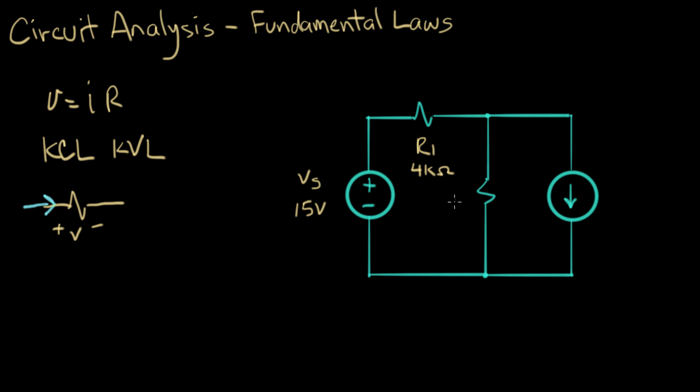And another resistor R2 is sitting right here. And we'll give it a value of 2k ohms, 2,000 ohms. And finally there's a current source sitting over here. And this has a value of 3 milliamps flowing downwards.